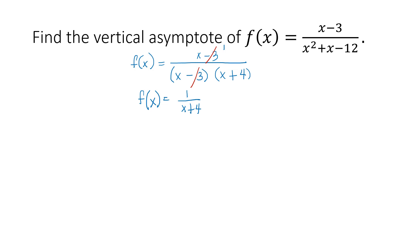Now, to get the vertical asymptote, we equate the denominator to 0. So x + 4 = 0, giving x = −4. This x = −4 is the vertical asymptote. When you graph the given function, its graph will approach x = −4 from the left and from the right, but they will never intersect this vertical asymptote.